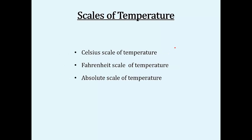Temperature is a physical quantity that measures the degree of hotness or coldness of an object. There are three different scales of temperature: Celsius scale, Fahrenheit scale, and absolute scale, which is also called the Kelvin scale.